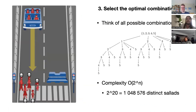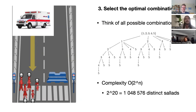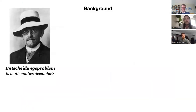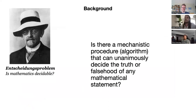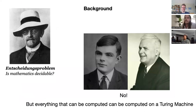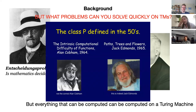You might not care that much about salad, but we can think of similar situations in ethical environments — like an ambulance that needs to pick up as many people as possible. Then you run into these intractable problems. A hundred years ago, Hilbert asked: is mathematics decidable? Is there a mechanistic procedure — an algorithm — that can unanimously decide the truth or falsehood of any mathematical statement? Church and Turing said no, but everything that can be computed can be computed by a Turing machine.